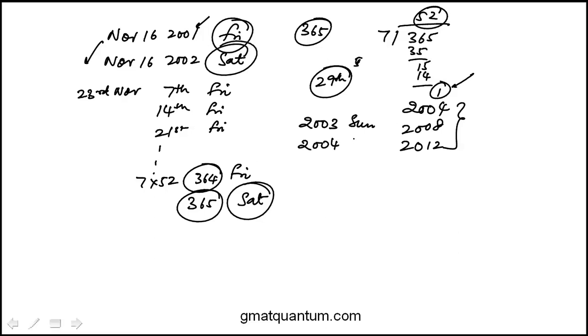2004 is a leap year, so that jumps from Monday to Tuesday. And 2005 is Wednesday, 2006 Thursday. It's just safe to actually just write it this way. 2007 is Friday.